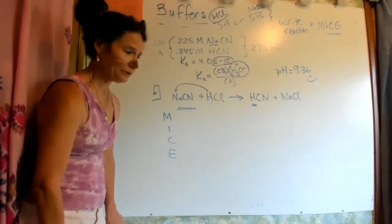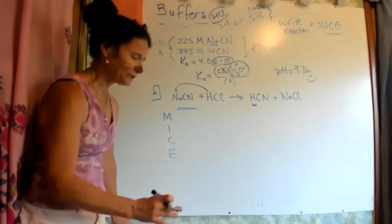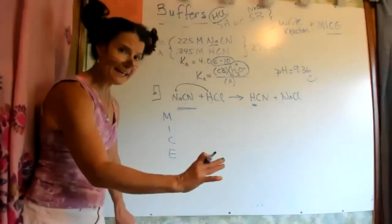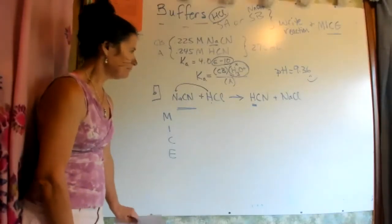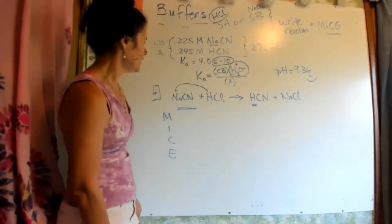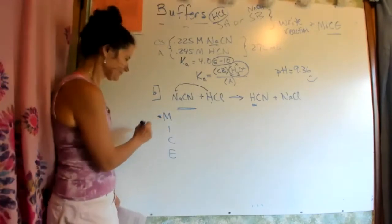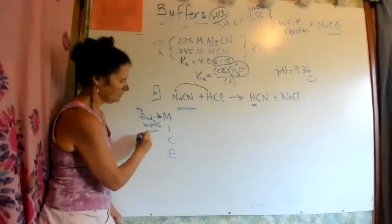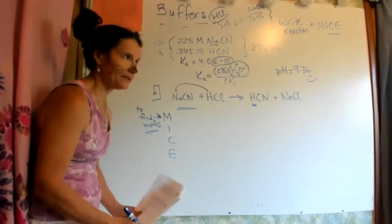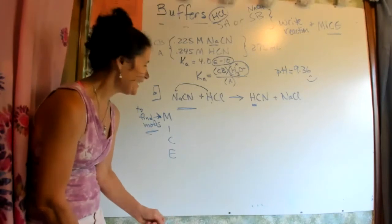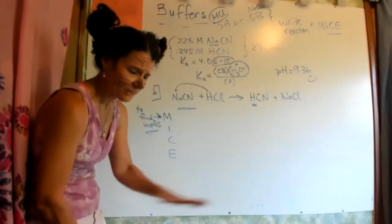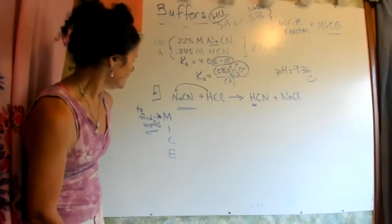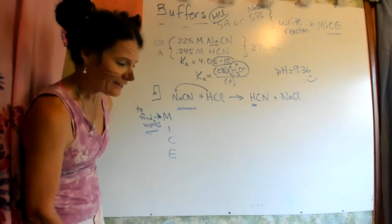I recommend doing the first page of your study set and your worksheet before tomorrow's titrations lecture so you have buffers down. The key with the M step is to find moles. The charts on the midterm were done in molarity — but now if the volume changes, molarity changes, so we have to work in moles. How do I know the volume changed? Because I just added some HCl: I had 275 mL, I added 25 mL.